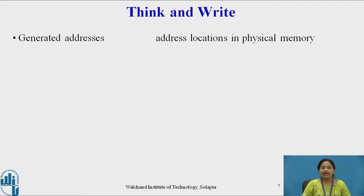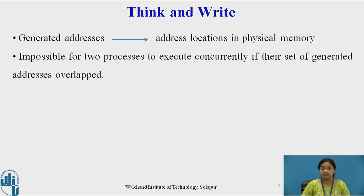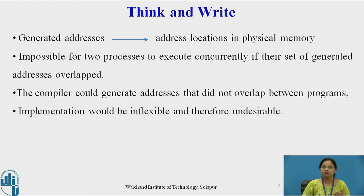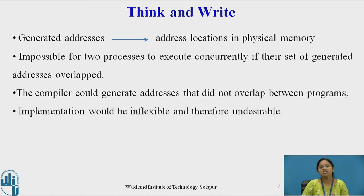If the machine treats the generated address as a direct physical memory address, it is not possible for two processes to execute simultaneously because their generated addresses may overlap. The compiler could try to generate different addresses for different programs, but this is not practically possible since generating unique addresses for every program is inflexible and undesirable. We have finite memory while the number of programs compiled is infinite, so the compiler generates virtual addresses that the memory management unit converts into physical addresses.